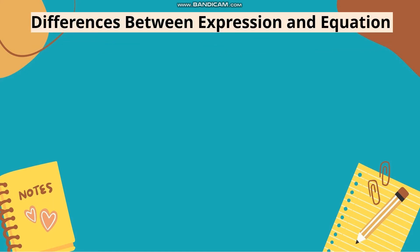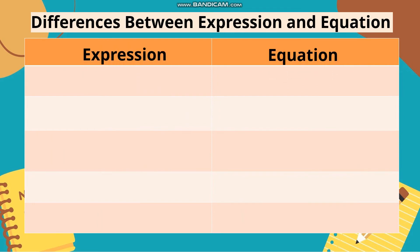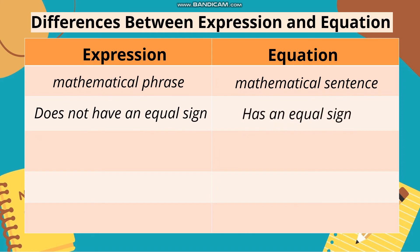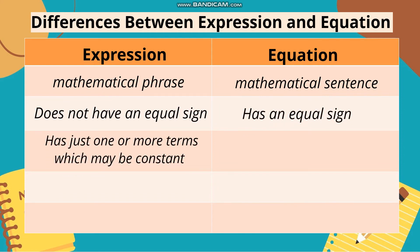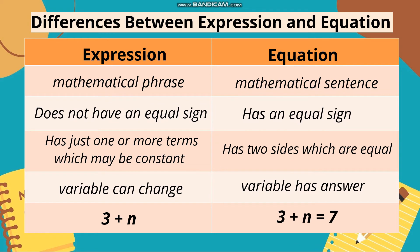Differences between expression and equation. Expression is a mathematical phrase; equation is a mathematical sentence. Expression does not have an equal sign; equation has an equal sign. Expression has just one or more terms which may be constant; equation has two sides which are equal. In an expression, the variable can change; in an equation, the variable has an answer. Example of expression: 3 plus N. Example of equation: 3 plus N equals 7.